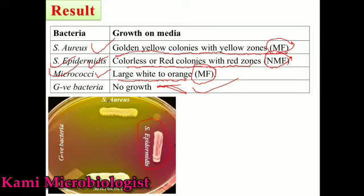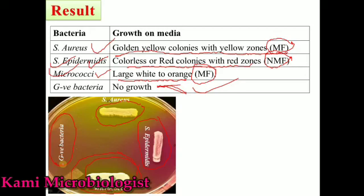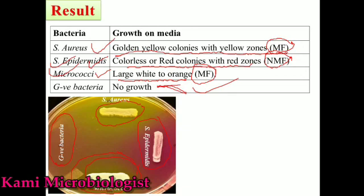As you can see in the picture: the growth of Staphylococcus epidermidis shows no yellow zone, meaning it is non-mannitol-fermenting; the growth of Staphylococcus aureus shows golden yellow colonies indicating mannitol fermentation; the whitish to orange colonies identify Micrococcus luteus, which also produces a small yellow zone confirming mannitol fermentation. The area streaked with gram-negative bacteria shows no growth. This is all about Mannitol Salt Agar. Thank you so much for watching.